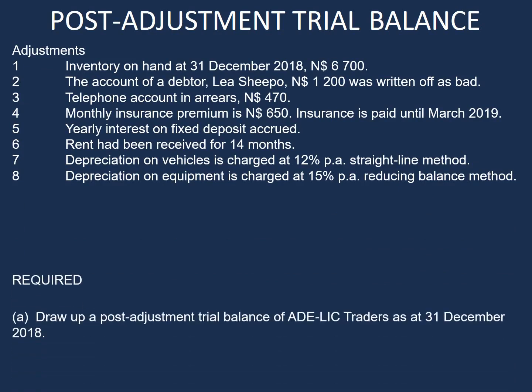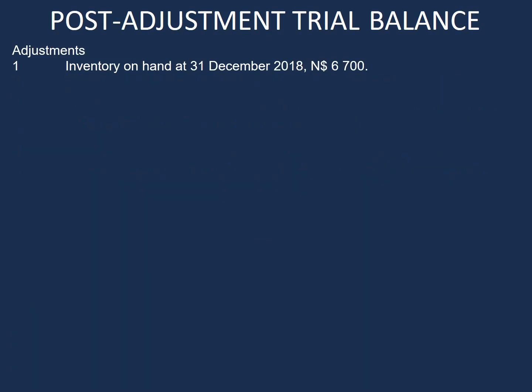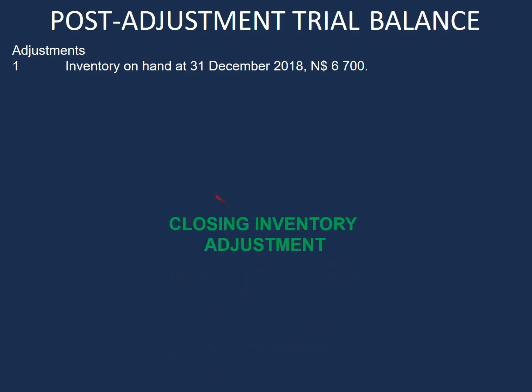We are required to draw up a post-adjustment trial balance of Adelik Traders as at 31 December 2018. Our first adjustment reads as follows: inventory on hand 31 December 2018 is 6,700. Our closing inventory adjustment will not be entered in our post-adjustment trial balance, so we can move on to the next adjustment.